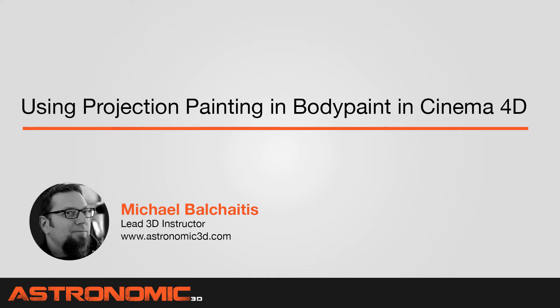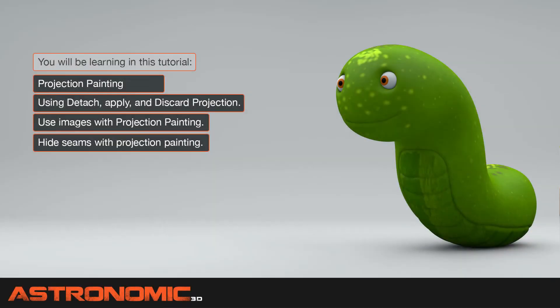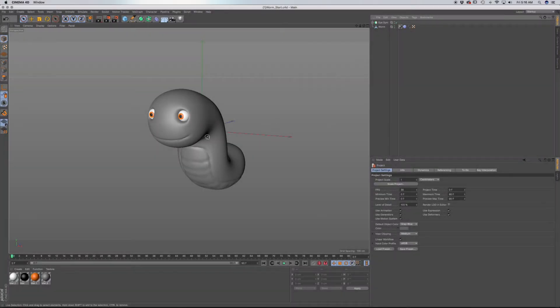Hi guys, this is Mike. In this Cinema 4D tutorial, I'm going to show you how to use projection painting within Body Paint. What we're going to talk about is how to apply projection painting, what its uses are, and all the tools that are associated with it. I have this model already sculpted out so we can start painting on it, so let's head on over to the Body Paint layout.